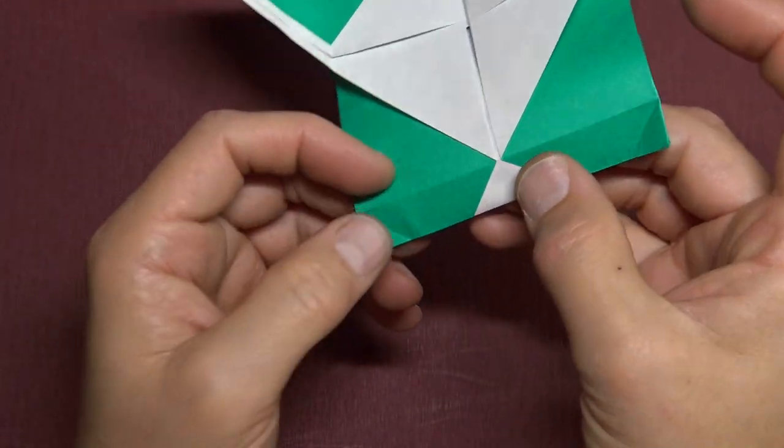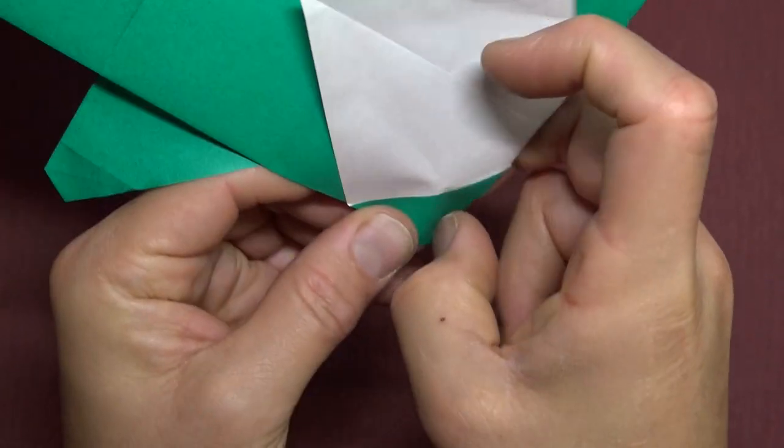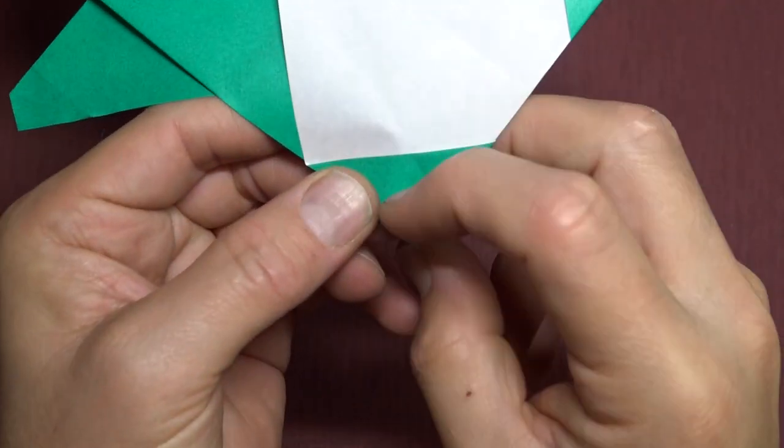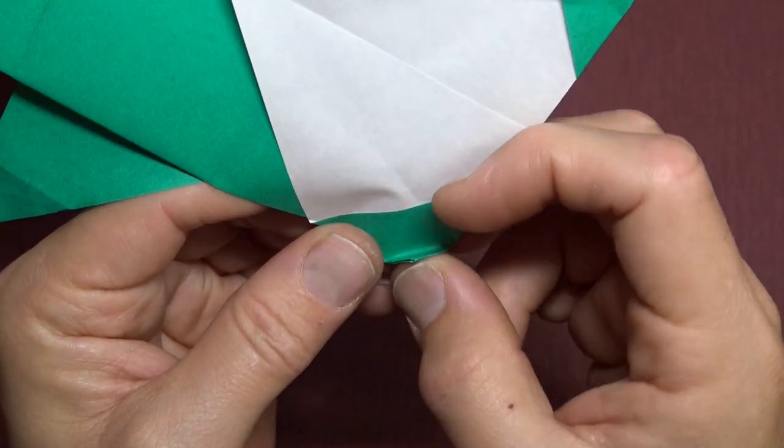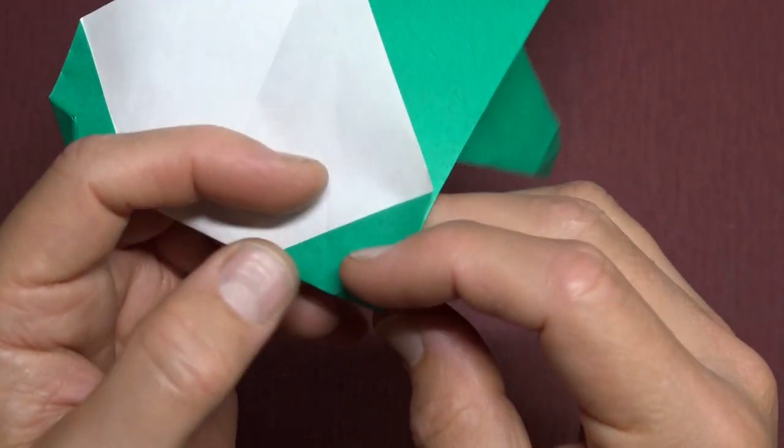Unfold. Turn over. And refold on this side. So we're just reversing the creases. You might want to erase it by just pressing on it. And now go like that. And repeat.